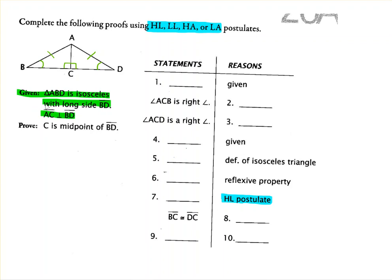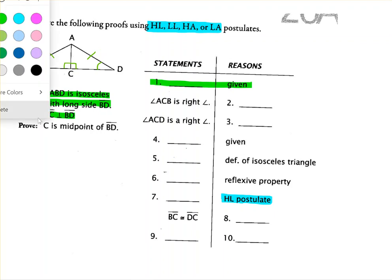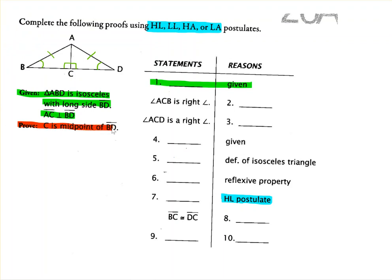Since AC is perpendicular to BD, it follows that these must be right angles, since perpendicular lines form right angles. Our given statements always provide a starting place for our proof, and our prove statement is the stopping place — it will be the very last statement. Sometimes it's good to analyze what we're being asked to prove, because it gives us an idea of the approach we need to take. We are asked to show that C is the midpoint of BD.